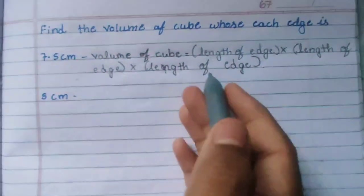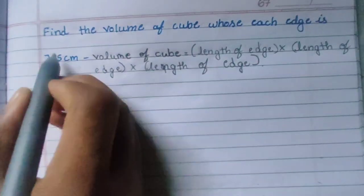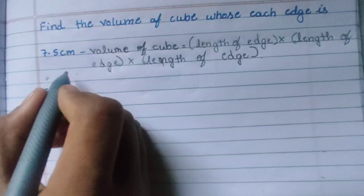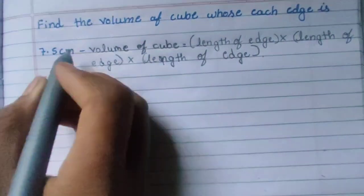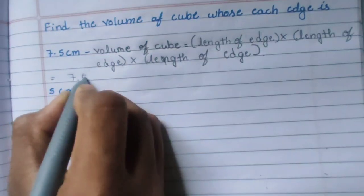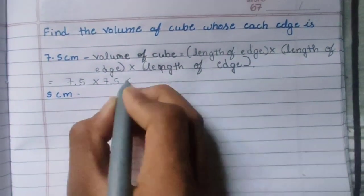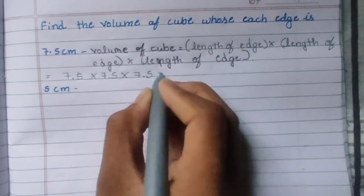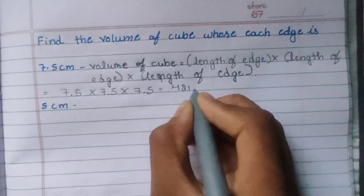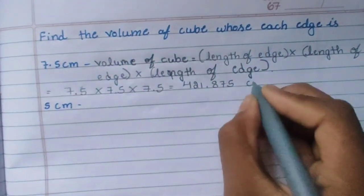Now, using this formula, let's answer the question. The edge is 7.5 cm. We have to multiply 7.5 cm three times: 7.5 × 7.5 × 7.5. We get the answer: 221.875 cm³.